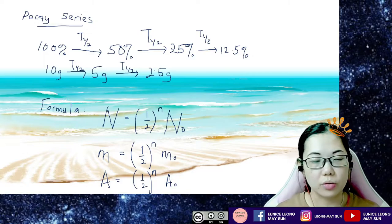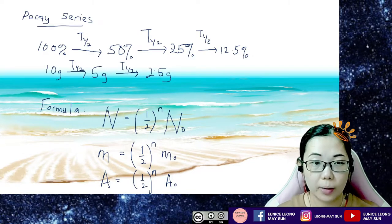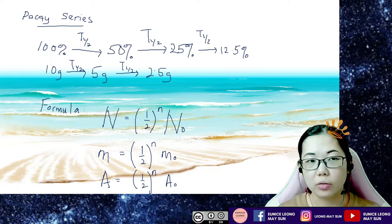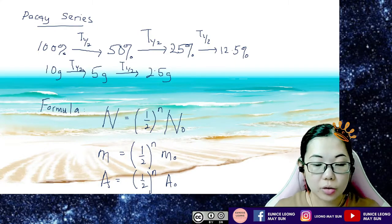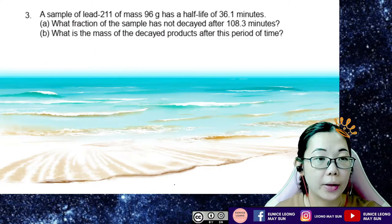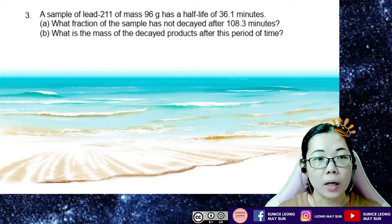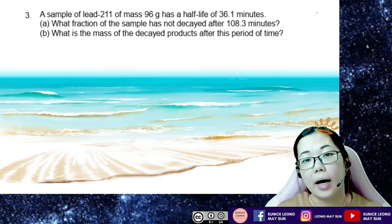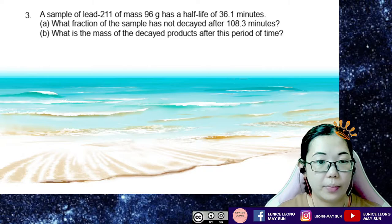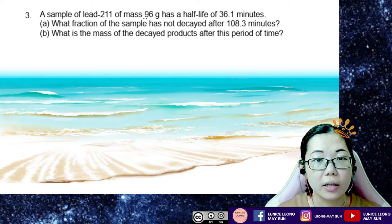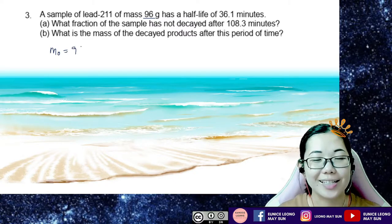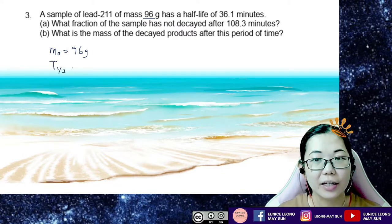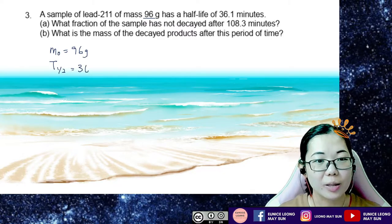So there are two methods — the decay series and the formula. I prefer to use the decay series most of the time. Now in this particular question: a sample of lead-211 of mass 96g has a half-life of 36.1 minutes. So the initial mass M₀ is 96g, and the half-life is 36.1 minutes.